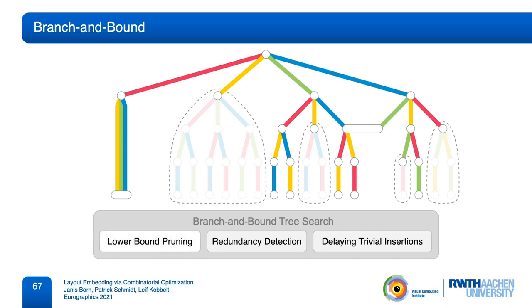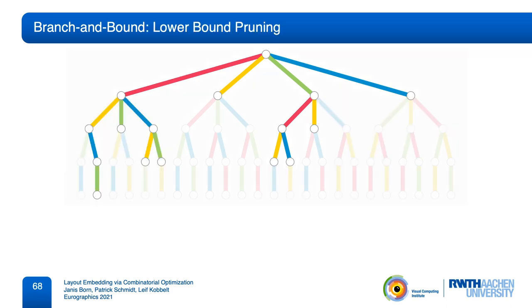Let's start with lower bounds. During the search, we remember the best embedding we have encountered so far and its total length. This gets updated whenever we reach a leaf node with a better solution. Now consider an interior node. Suppose we have a way to compute a minimum length of all leaf nodes reachable from there. If this lower bound is already larger than the length of the best solution, we can ignore this entire subtree in our search since we would never find a better solution by searching it.